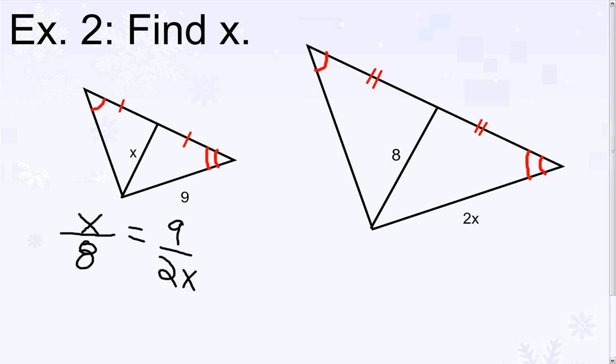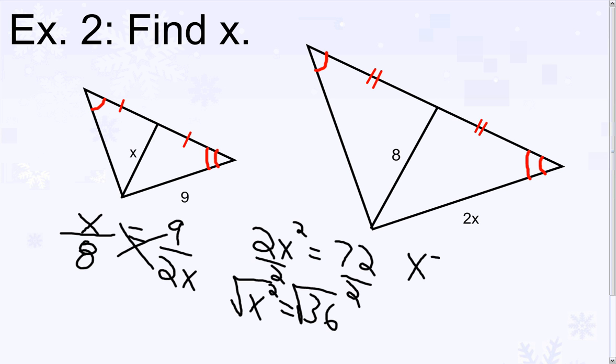This scale factor must be equal because they are similar. Whenever we have a proportion like this, we cross multiply to solve. We get 2x squared equals 72. Solving for the variable, x squared equals 36. To eliminate the square, we take the square root. The square root of 36 is 6.